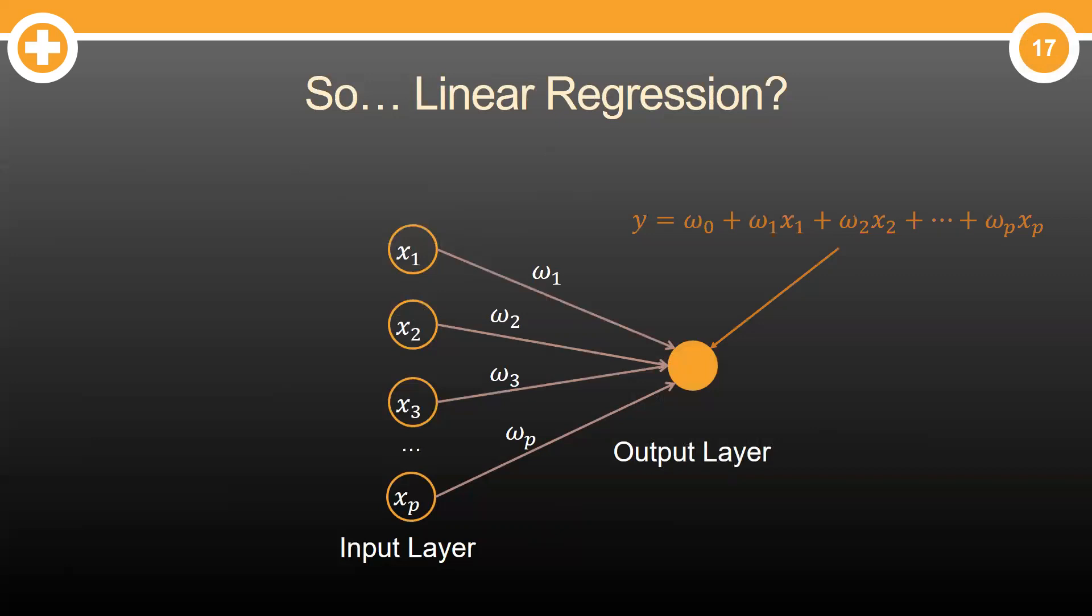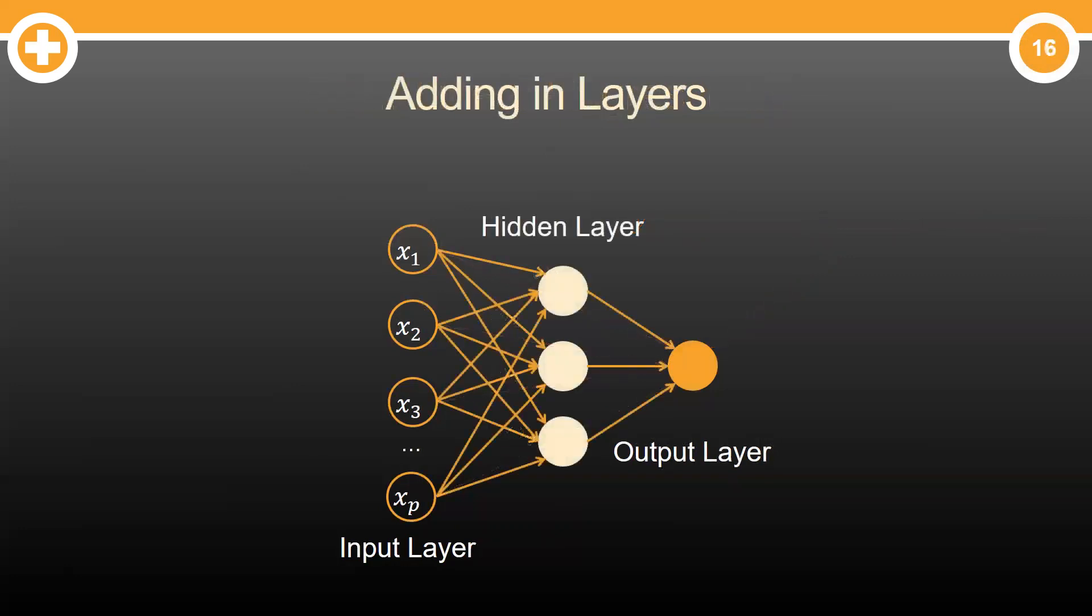Wait, it kind of looks like a linear regression model. It is. However, the things that make neural networks more complicated than linear regression are the hidden layers that typically exist between the input and output layer.